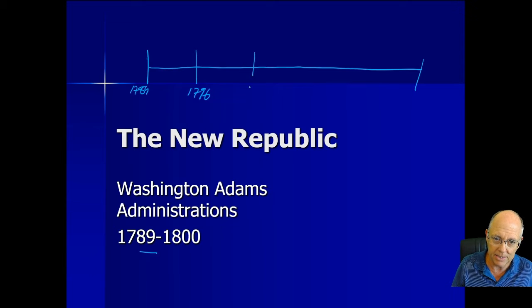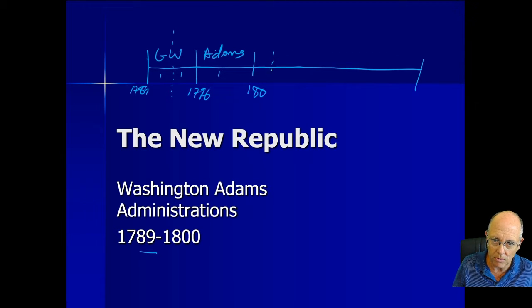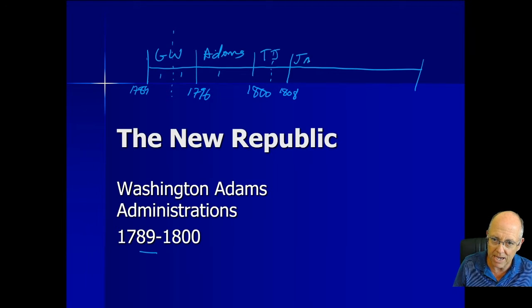From 1796 to 1800, this is Adams. GW has two terms, Adams has one term. Jefferson comes next — he's two terms — Thomas Jefferson, and he leaves office in 1808. Then we have James Madison; he gets two terms and leaves office in 1816.